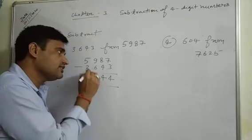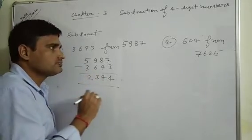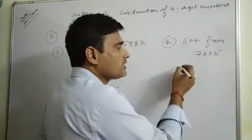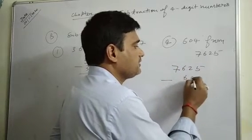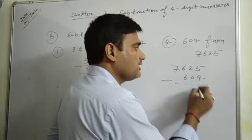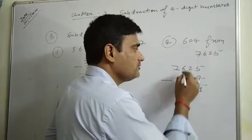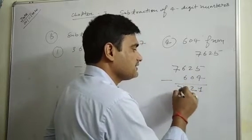9 minus 6 is 3, and 5 minus 3 is 2. Question number 4: 7625 minus 604. 5 minus 4 is 1, 2 minus 0 is 2, 6 minus 6 is 0, and 7 remains. The answer is 7021.